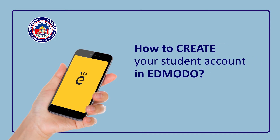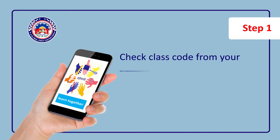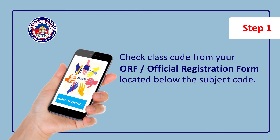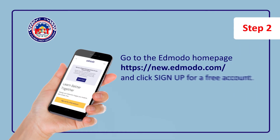How to create your student account in Edmodo. Check the class code from your official registration form located below the subject code. Go to the Edmodo homepage at new.edmodo.com and click Sign Up for a free account.